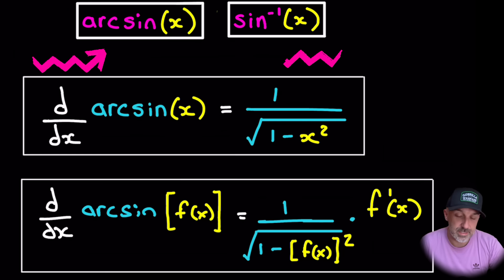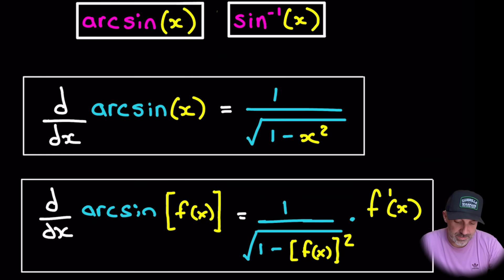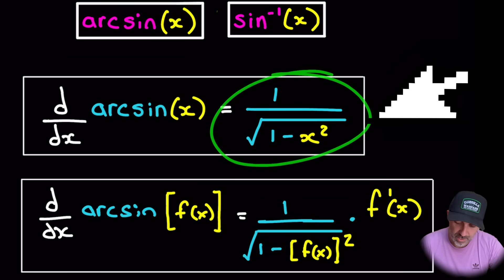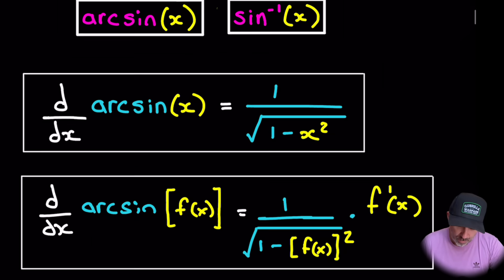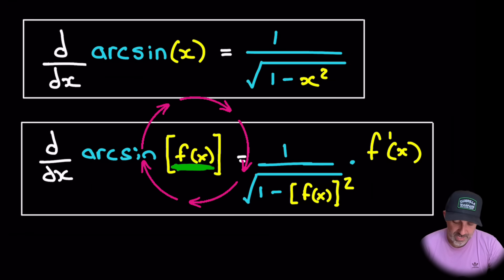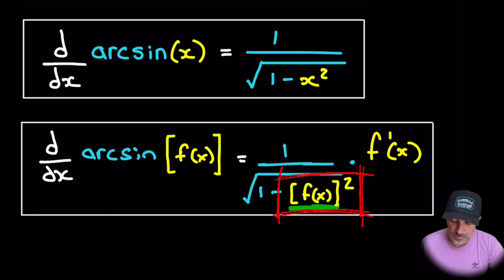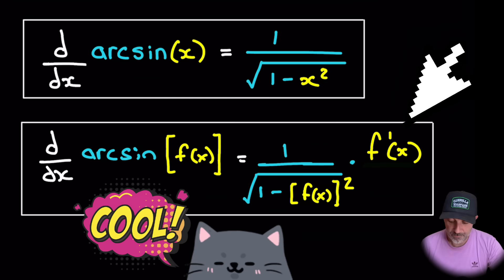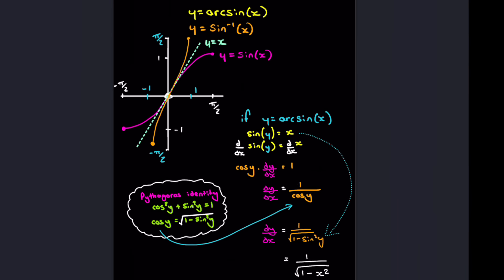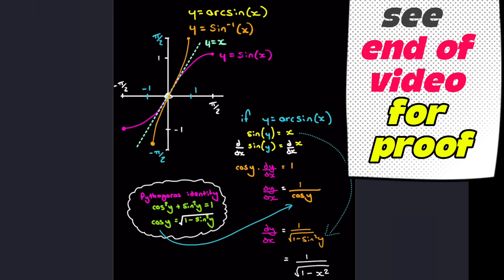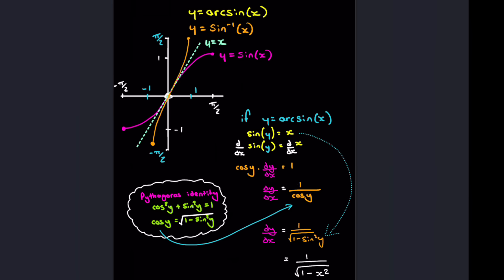Remember, arc sine of x is the inverse of sine — and so is sine to the minus one; they're exactly the same meaning. In most textbooks, the derivative of arc sine of x is one over root one minus x squared. However, if f of x is something different — like x squared, 2x, or 3x squared — then we apply this rule as one over root one minus f(x) squared, and we must also multiply by the derivative of f(x). I'll leave the proof of why it's one over root one minus x squared for the end of the video.